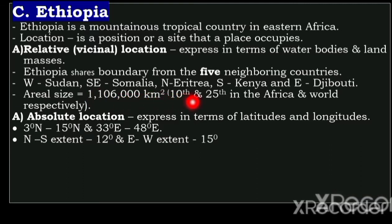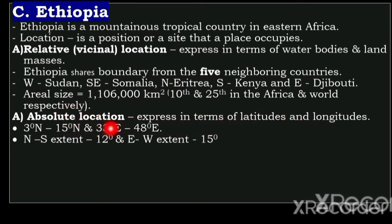Ethiopia is the tenth and twenty-seventh largest country in Africa and the world respectively. The absolute location is expressed in terms of latitude and longitude: three degrees to fifteen degrees north and thirty-three to forty-eight degrees east. The north-south extent of Ethiopia is twelve degrees and the east-to-west extent is fifteen degrees.